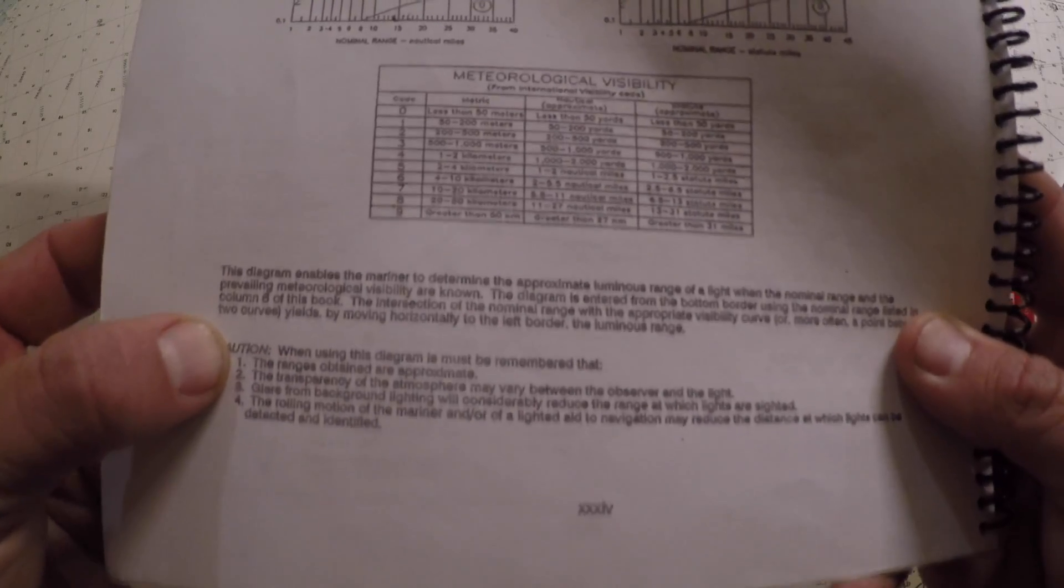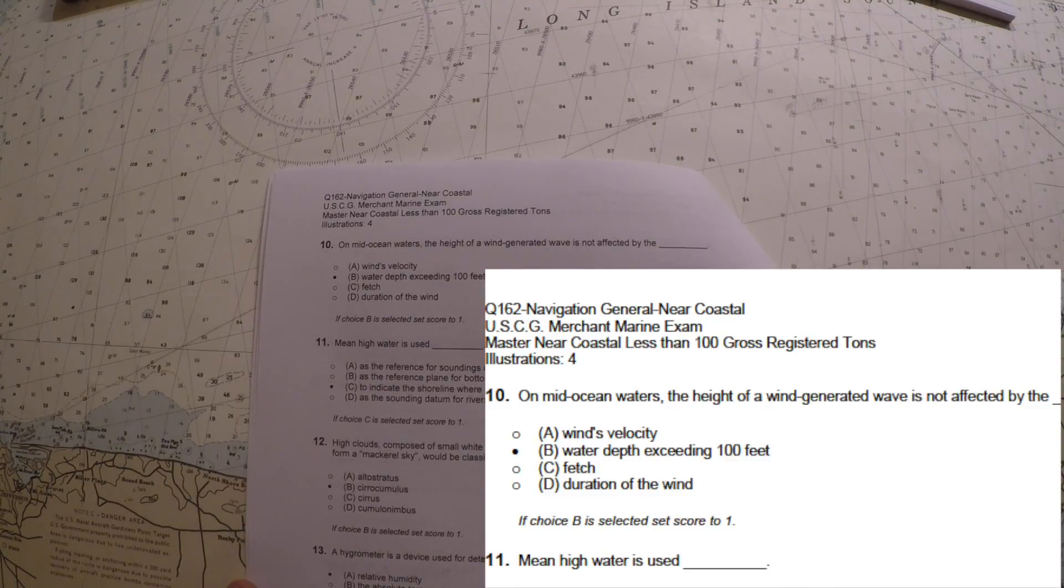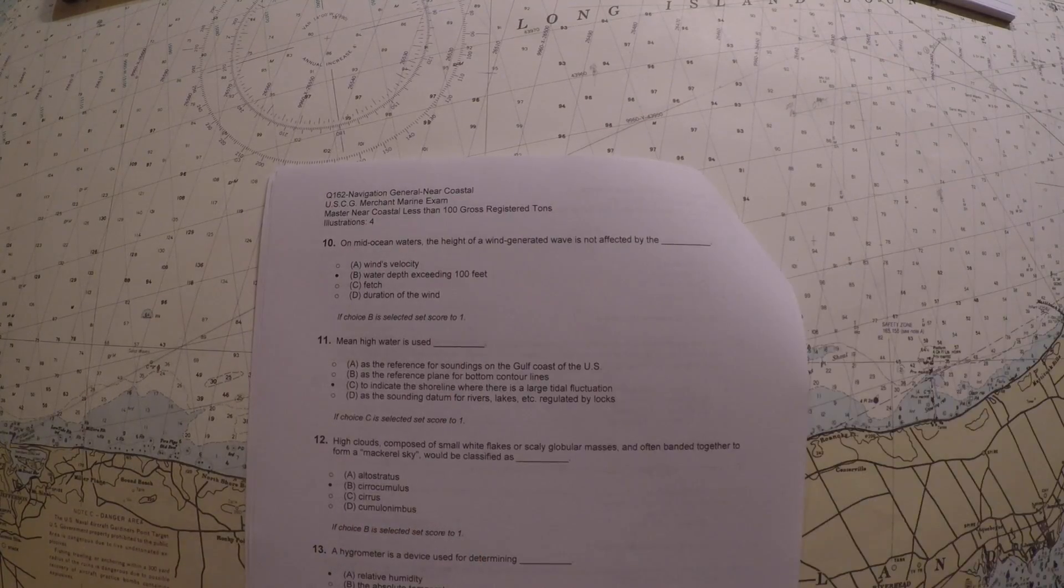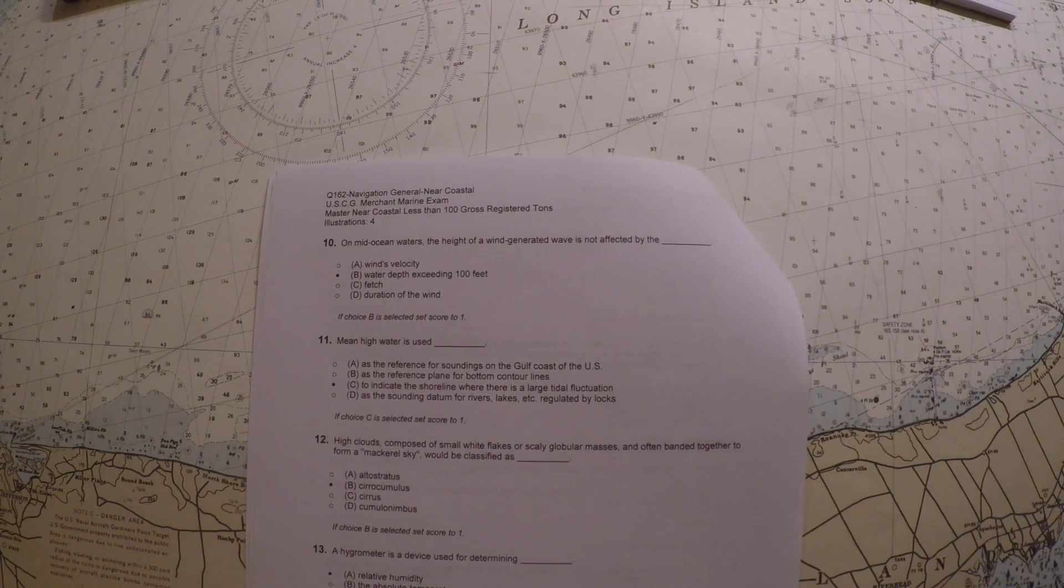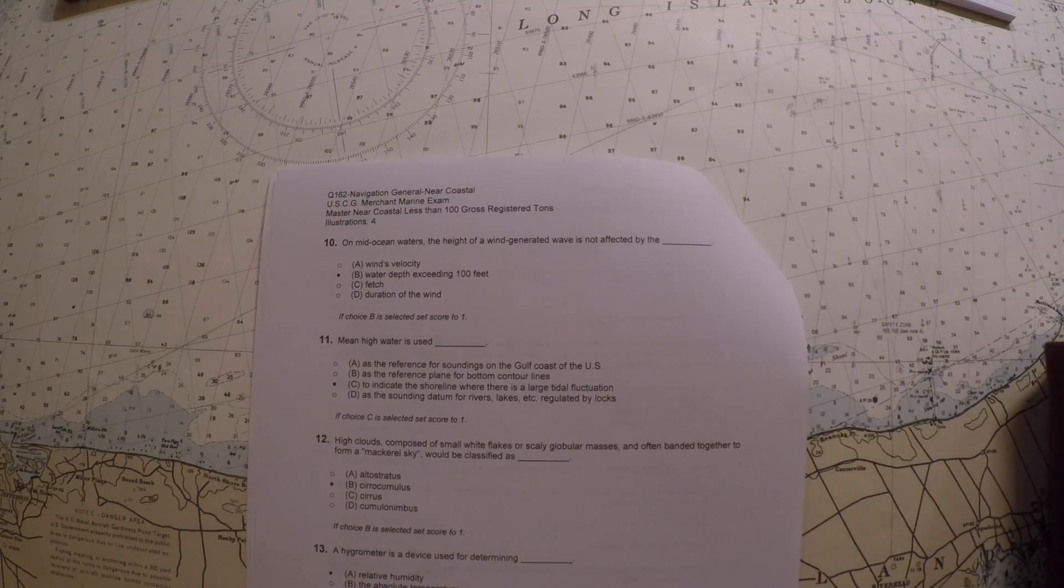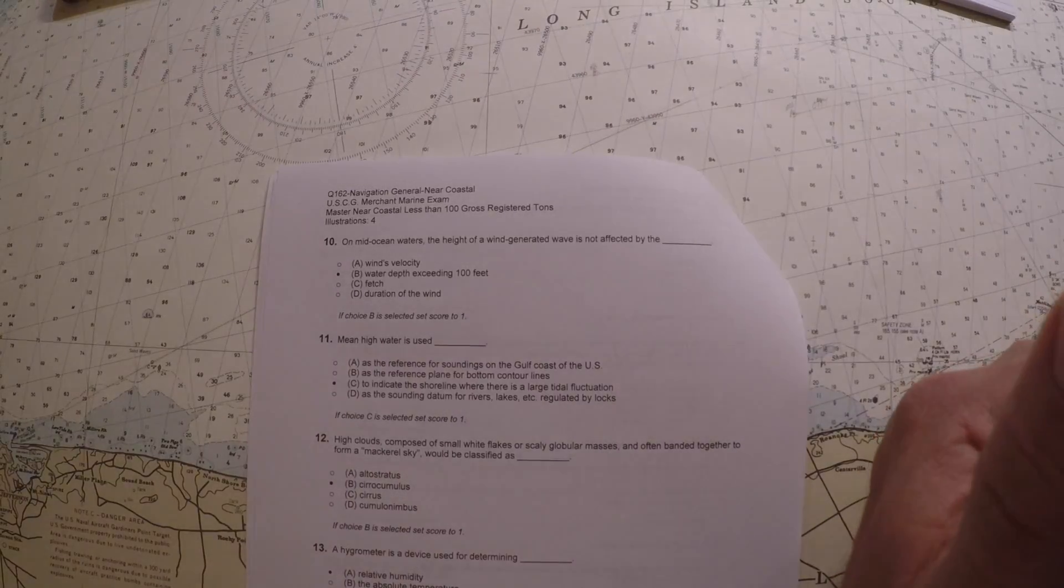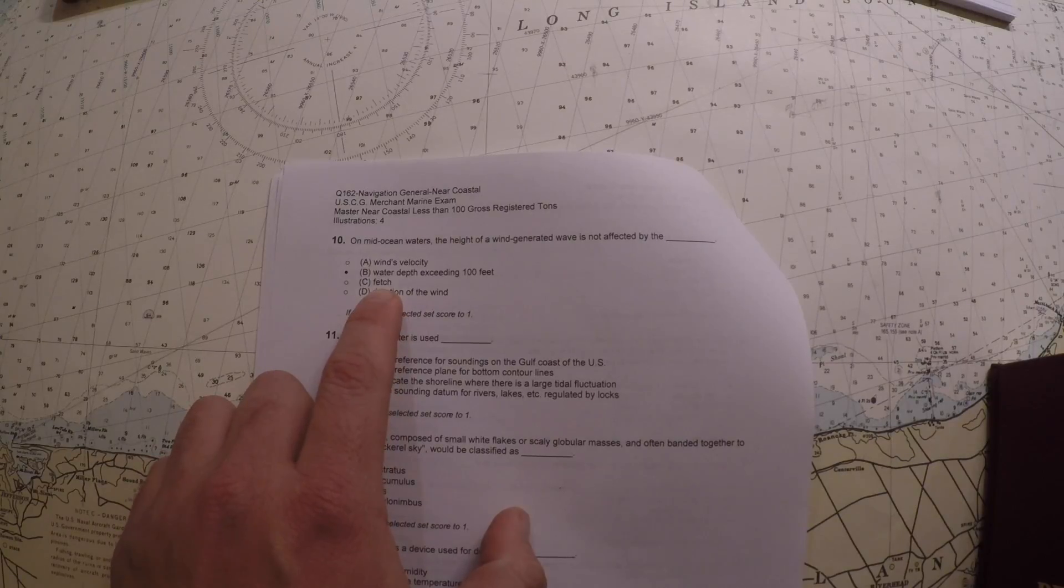For number 10, it's a trivia question regarding oceanography. It says on mid-ocean waters the height of a wind-generated wave is not affected by which of the following. The best way to answer this is to say what does affect wind-generated waves. We're not talking about tsunamis or earthquakes, we're talking about the wind blowing on the surface of the sea. Let's take a look at Bowditch in the oceanography section. You could look in the index for fetch if that's a word you're not familiar with.